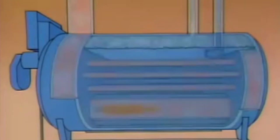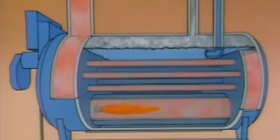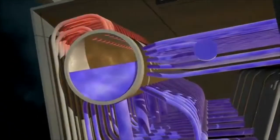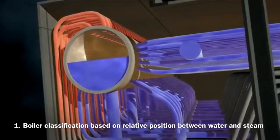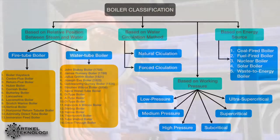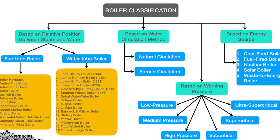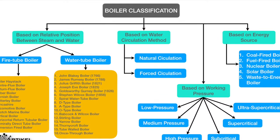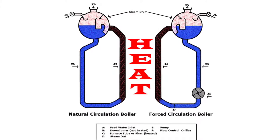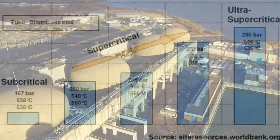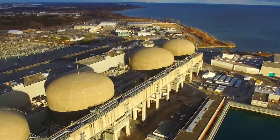In the previous two videos we discussed the types of fire tube and water tube boilers. We classified those two types based on the relative position of water with steam. Besides that classification, we also classify the boiler into three other types: classification based on the method of water circulation, based on work pressure, and based on the fuel used.